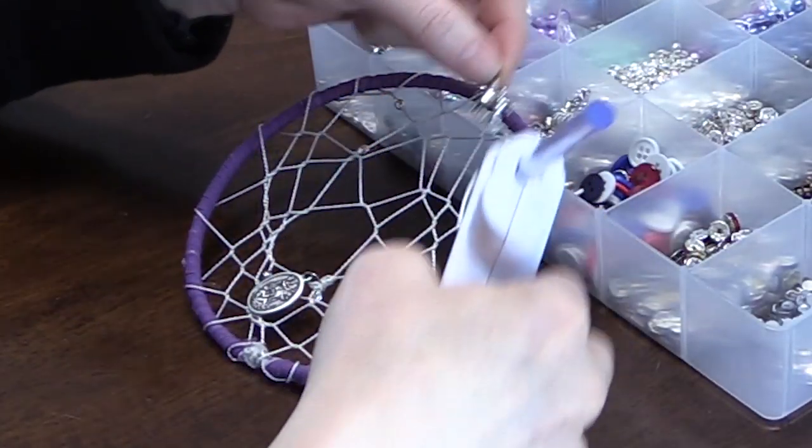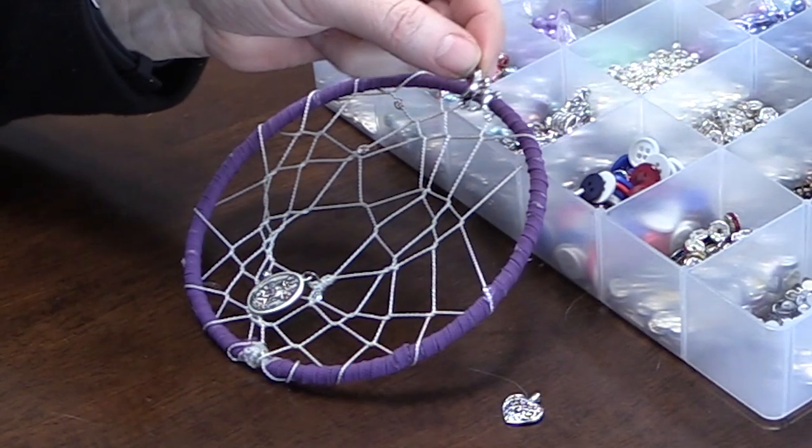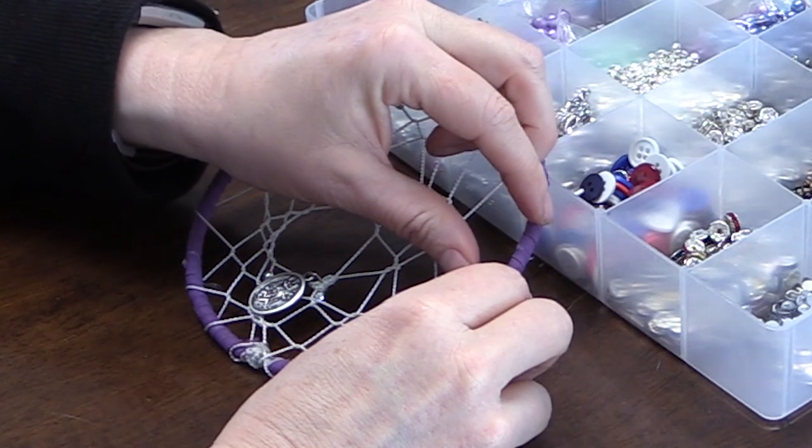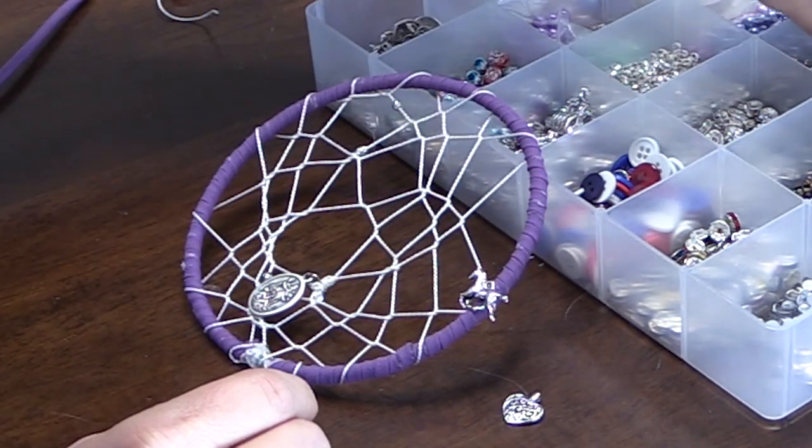And then I had some horse charms, so I just wanted to cover up some of the white string that's on the outside of the dream catcher, and I just put a couple of horse charms onto the purple part of the dream catcher.